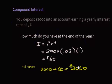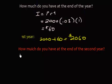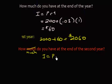That's not much different than simple interest, but now where this gets different is the next question: how much do you have at the end of the second year? It's still going to use the formula I = PRT, but the difference with compound interest is that you take the interest not off the original principal of $2,000, but off the previous balance.